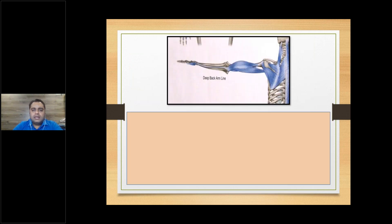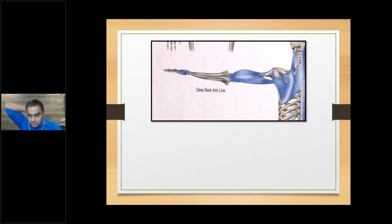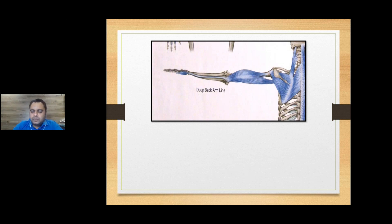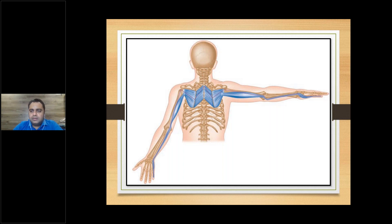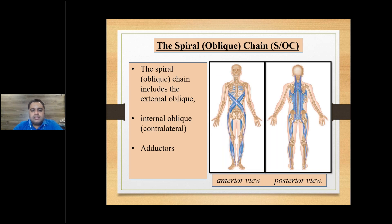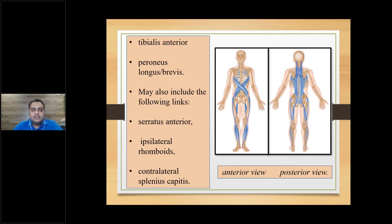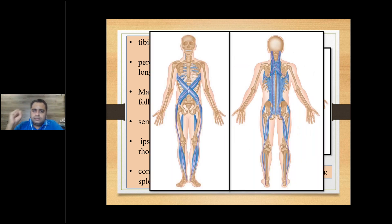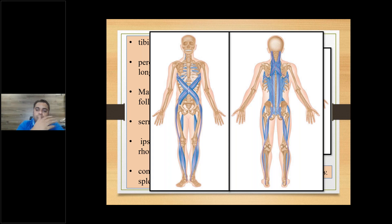The deep back arm line involves the rhomboids, the infraspinatus, the trapezius — giving conditions like neuritis. All of these are very common in people today, especially the cervical upper back. The spiral oblique chain connects different areas and we need to understand how everything is interconnected — one particular trigger point leading to an imbalance in the entire posture. If a person's posture is different, we can analyze which muscle, which groove, which fascial chain, which myofascial meridian we need to work on.